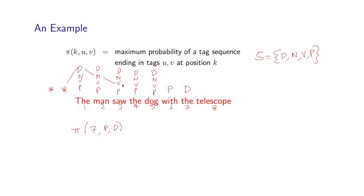And we always have star, star as these two start symbols. And so there are many possible different sequences of tags which end in p, d at positions 6 and 7. For example, I could have d, n, v, p, p, p, d. That's one possible sequence. And there are many others. Each of them will have a probability, which is calculated by multiplying together the trigram probabilities and the emission probabilities, these q terms and these e terms. And pi 7, p, d is going to be the maximum probability for any of these tag sequences, which ends in tags p and d at positions 6 and 7.